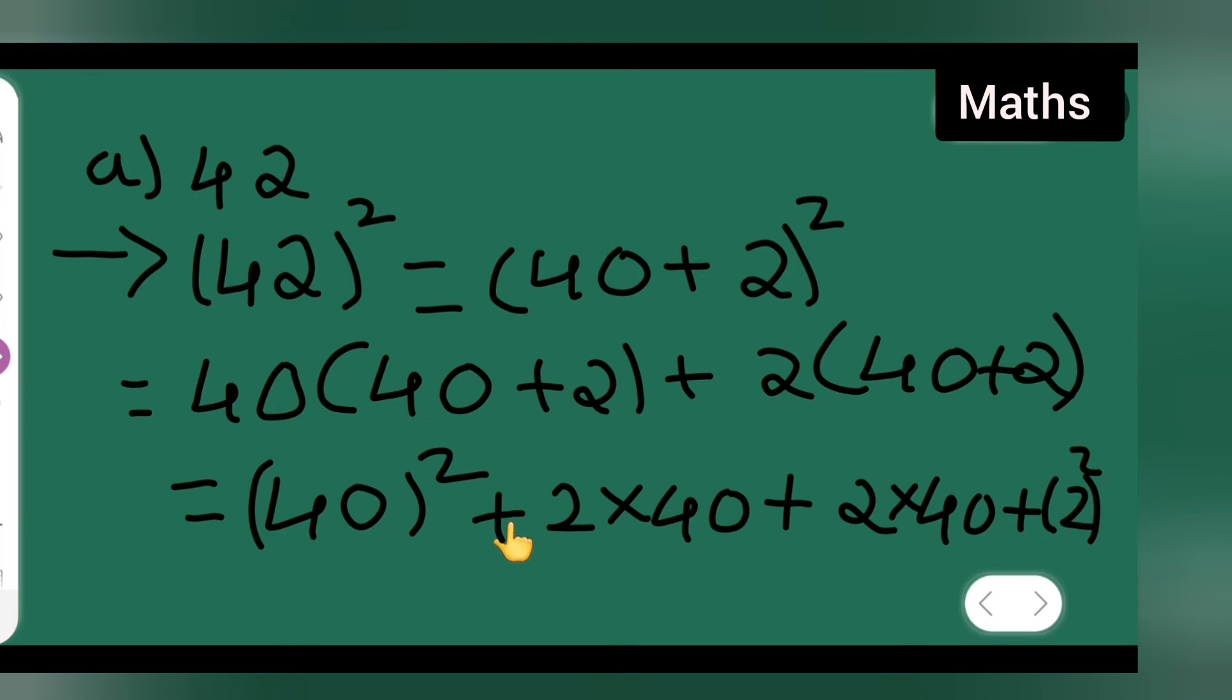40 square is nothing but, sorry, 1600. 1600 plus 2 times 40 is 80, plus 80 plus 4.